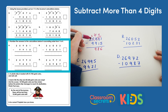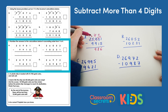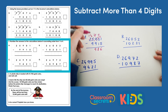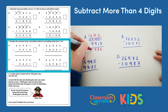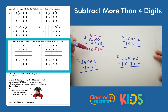We can't subtract 9 from 4, so we need to exchange one more time. 14 subtract 9 is 5, and then 1 subtract nothing is 1, so we get 15,986.